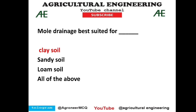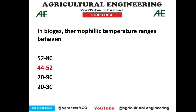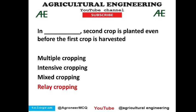Mole drainage is best suited for clay soil — from drainage and soil reclamation. A formula integration has to be solved: the answer is tan⁻¹(x) + C. Biogas thermophilic temperature ranges between 44 to 52 degrees — option 2 is correct.